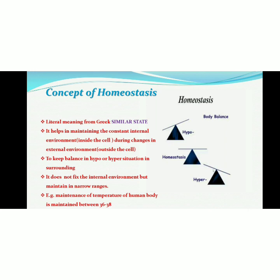Looking at this diagram, there are three prisms. The middle prism represents a balanced condition — we call this normal homeostasis. The first and third prisms represent imbalance situations. The first one is a hypo situation and the third is a hyper situation. Hypo means too little and hyper means too much.